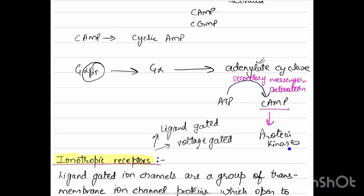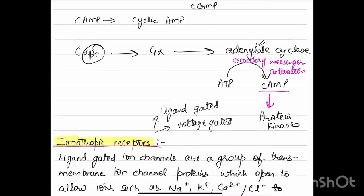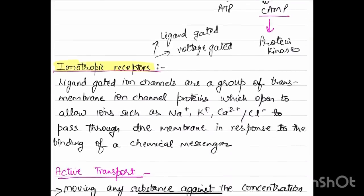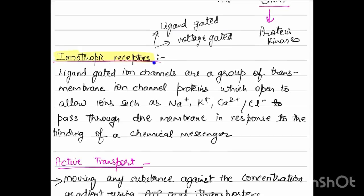Next type of receptors are ionotropic receptors. They can either be ligand-gated or voltage-gated. Ligand-gated ion channels are a group of transmembrane ion channel proteins which open to allow ions such as sodium, potassium, calcium, chlorine to pass through the membrane in response to the binding of a chemical messenger.